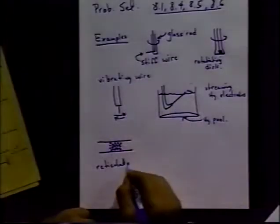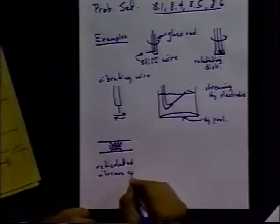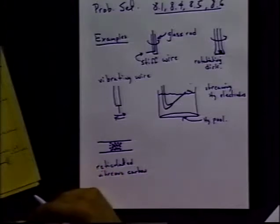You can also buy what they call reticulated vitreous carbon, which is like glassy carbon, which some of you might have experience with, but it's foamed into a porous carbon electrode. And those are very useful, too. So a lot of people use that material reticulated vitreous carbon as flow through electrodes, especially for synthetic purposes.